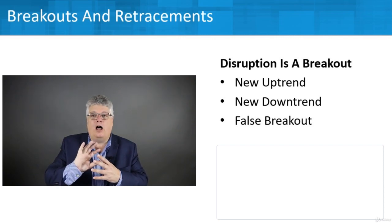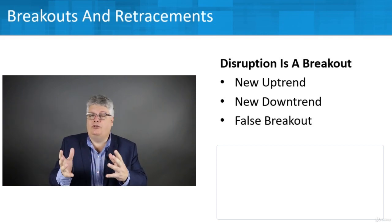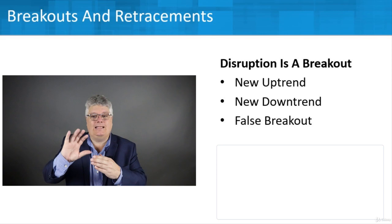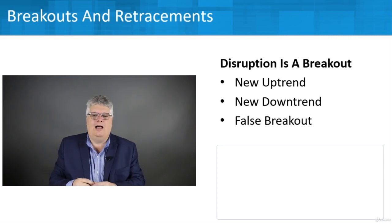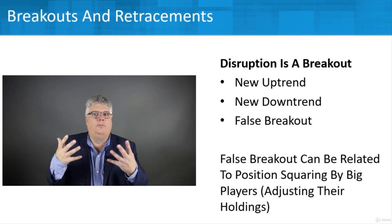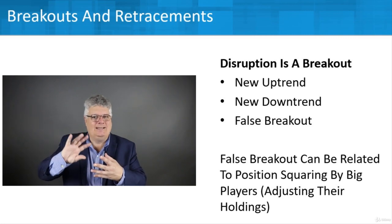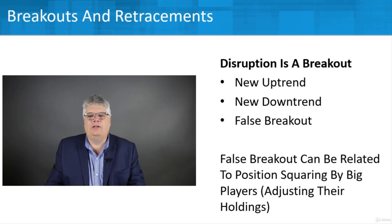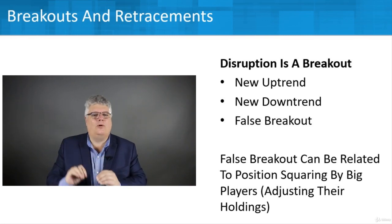There's either going to be a new uptrend or a new downtrend. You might also have a false breakout, where it breaks out but it's not really due to supply and demand or market sentiment. Something is causing a short-term disruption, such as position squaring by big players — large holders adjusting their positions in a particular security — rather than some more legitimate news.